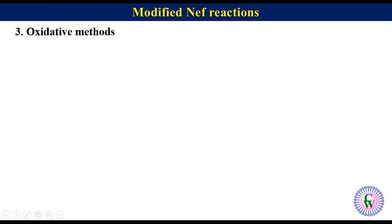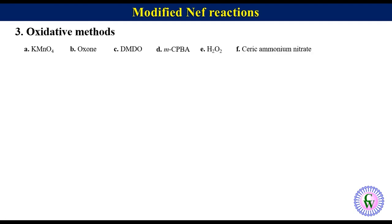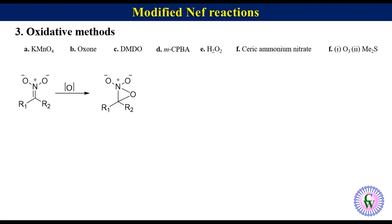Oxidative methods involve reaction of nitronate ion with KMnO₄, oxone, dimethyldioxirane, MCPBA, H₂O₂, ceric ammonium nitrate, or ozone followed by dimethyl sulfide. In the case of KMnO₄, oxone, dimethyldioxirane, MCPBA, and H₂O₂, the nitronate ion adds oxygen to the double bond to produce an oxiridine dioxide, which eliminates nitrate ion to produce an aldehyde or ketone.